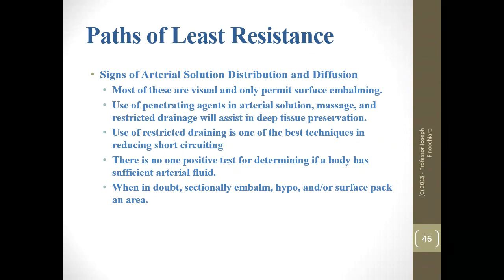Penetrating agents and arterial solution, massage, and restricted drainage will assist in deep tissue preservation. Restricted drainage is one of the best techniques to reduce short-circuiting — instead of leaving the drain tube open, close it off or intermittently restrict it. There is no single positive test for determining if a body has sufficient arterial fluid; when in doubt, sectionally embalm with hypodermic or surface pack supplemental treatments.